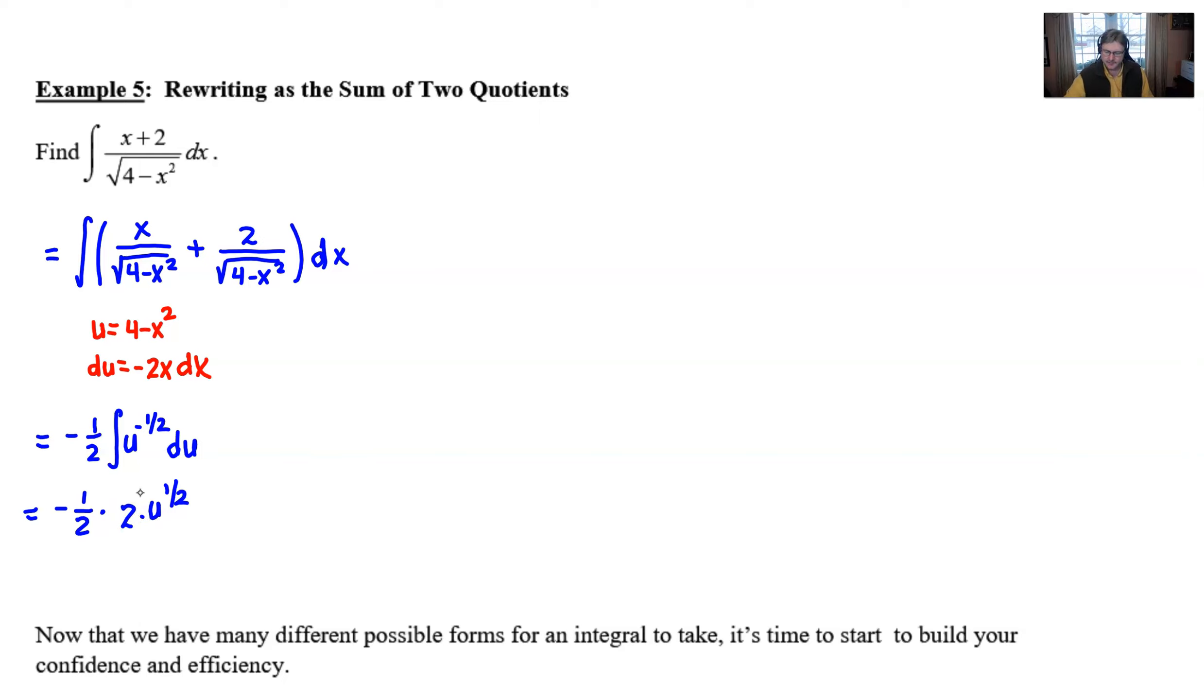Now my personal preference is to finish this integral first. Don't be jumping back and forth between different integration techniques because that's no good for anybody. Just go ahead and work this one out, simplify it as best you can. We back substitute the u, change the one half exponent to a radical.